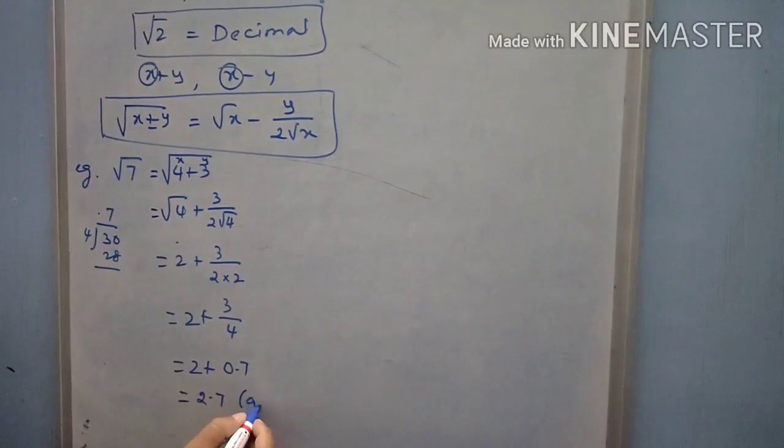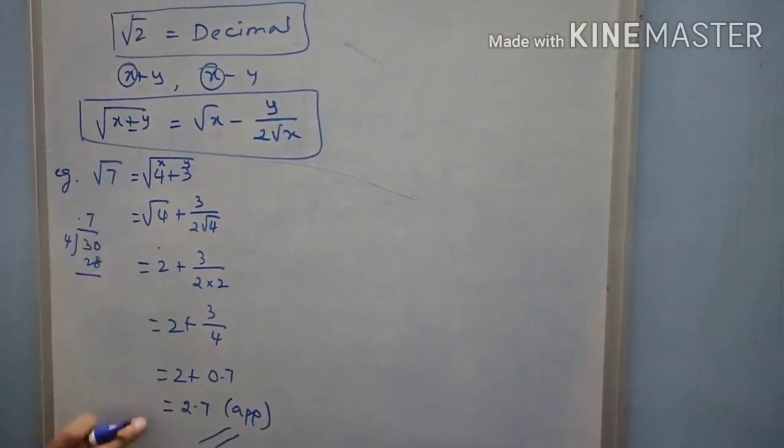After adding this one, you will get 2.7. So, 2.7 approximately. This is the square root of 7.